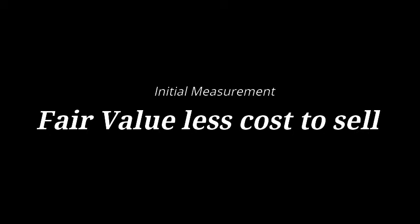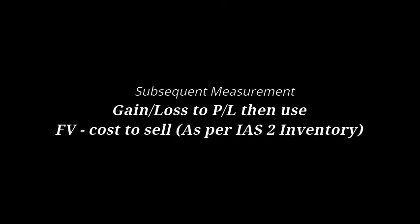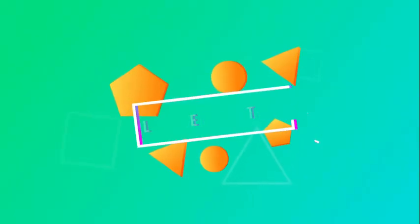So what is the initial measurement? Basically, you need to calculate the fair value of the milk, and if you have any cost to sell, you need to include that as well. Subsequently, you need to calculate the changes — the gain or loss on fair value — and pass it to the profit and loss. After that, you can recognize it as usual under IAS 2 Inventory.